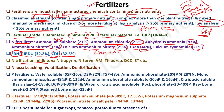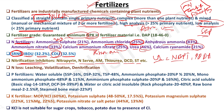Nitrification inhibitors prevent the first step of nitrification — ammonium to nitrite. Nitrosomonas bacteria are involved in ammonium to nitrite conversion, and Nitrobacter in nitrite to nitrate. Nitrification inhibitors include nitrapyrin, Ansorb, AM, thiourea, DCD, and sulfathiazole. Urease inhibitors include NBPT and PPDA (phenyl phosphorodiamide).